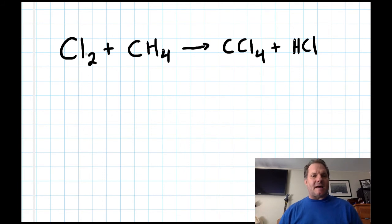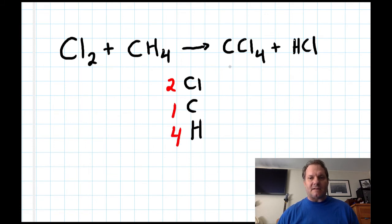Let's take a look at this example. Chlorine reacts with methane, CH4, to form carbon tetrachloride and hydrochloric acid. So let's make our list. So let's do our count now. We have two chlorines on the left, one carbon and four hydrogens. On my product side, I have four chlorines. I forgot about this one over here. That makes a total of five chlorines, one carbon and one hydrogen. Yeah, that's right.